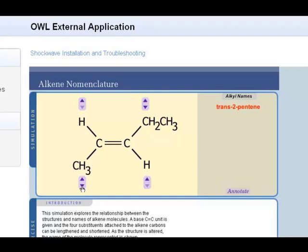Now I can make the cis-2-pentene isomer if I remove the ethyl group here and put it up on the top. And I could add another carbon down at the bottom.